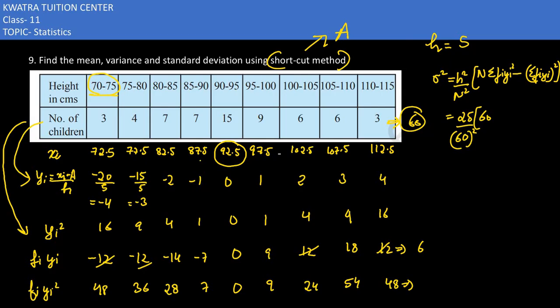For f_i*y_i², sorry, f_i*y_i squared - if you add these, you get 254. Then minus f_i*y_i squared, which is 36.